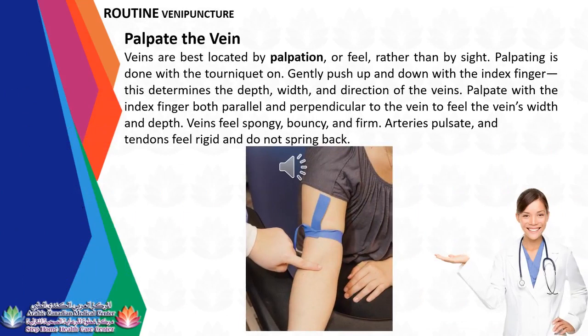Palpate the vein. Veins are best located by palpation — or feel — rather than by sight. Palpating is done with the tourniquet on. Gently push up and down with the index finger to determine the depth, width, and direction of the veins. Palpate both parallel and perpendicular to the vein to feel its width and depth. Veins feel spongy, bouncy, and firm. Arteries pulsate, and tendons feel rigid and do not spring back.